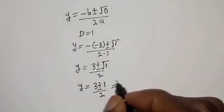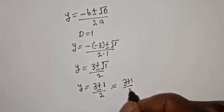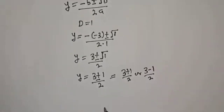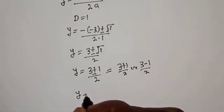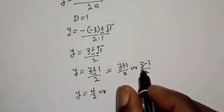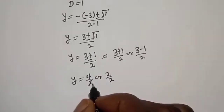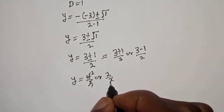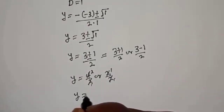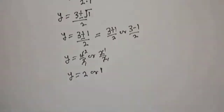So y is equal to 3 plus or minus 1, over 2. This gives y equal to 3 plus 1 over 2, or 3 minus 1 over 2. That is 4 over 2 or 2 over 2. Therefore y is equal to 2 or y is equal to 1.